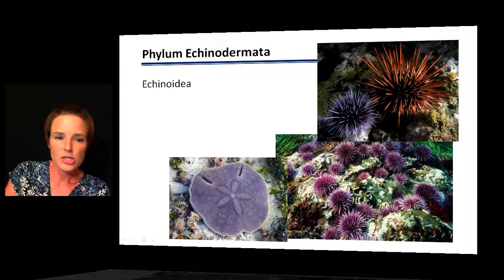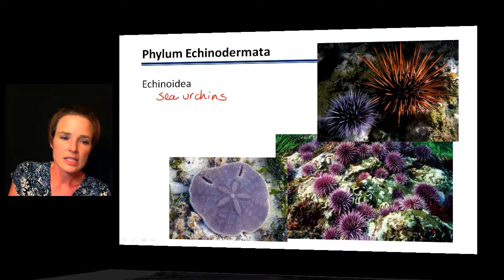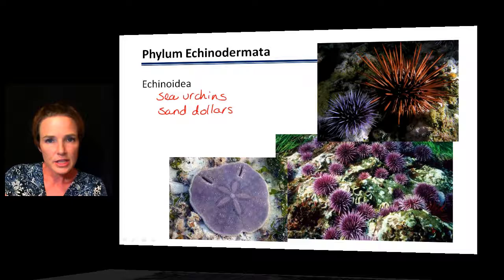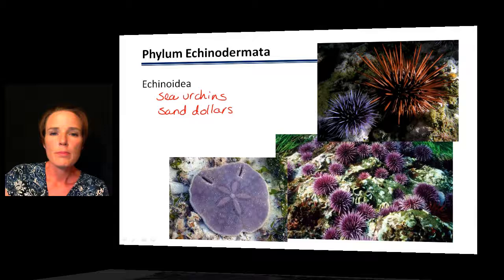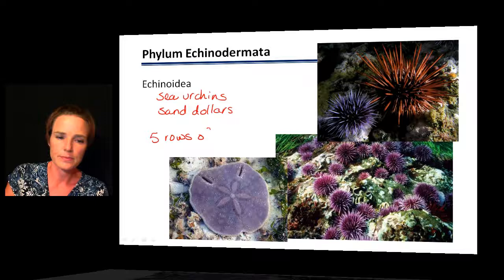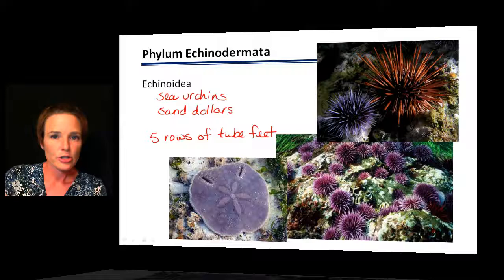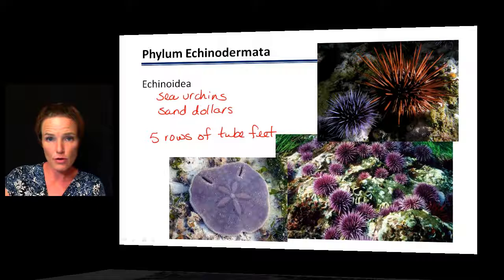This group includes the sea urchins and sand dollars. When you look at them, you don't see five arms radiating out like in the last two groups, but underneath they do have five rows of tube feet. Tube feet are characteristic of this entire phylum, so they are present here even though the overall shape looks somewhat different.